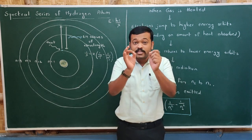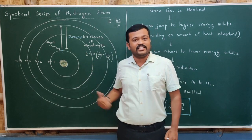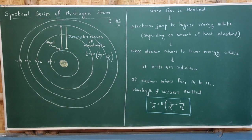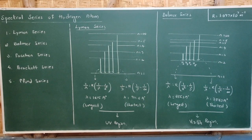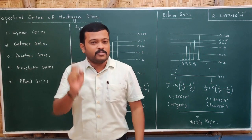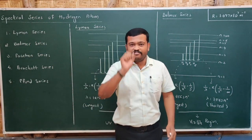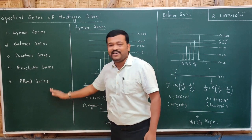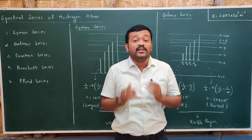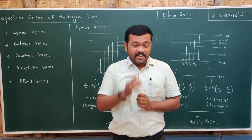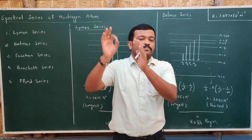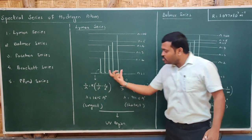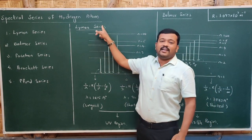These were the basic concepts about transition and wavelength of the hydrogen atom. Now let us understand the spectral series of the hydrogen atom. There are five series: Lyman, Balmer, Paschen, Brackett, and Pfund. These series depend upon the transition of electrons. If the transition of an electron takes place from any higher energy orbital to the first energy orbital, that is called the Lyman series.